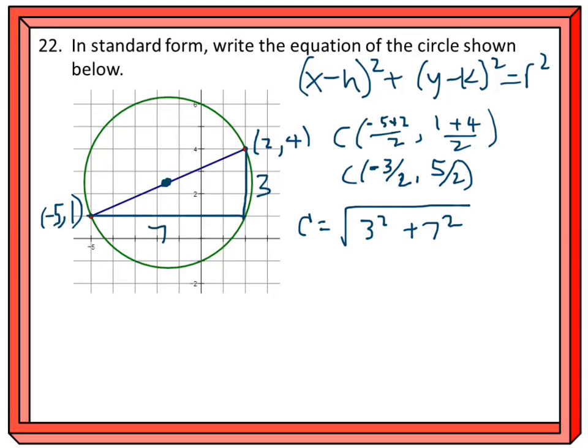Using the Pythagorean theorem, 3² is 9, and 7² is 49, which equals √58.